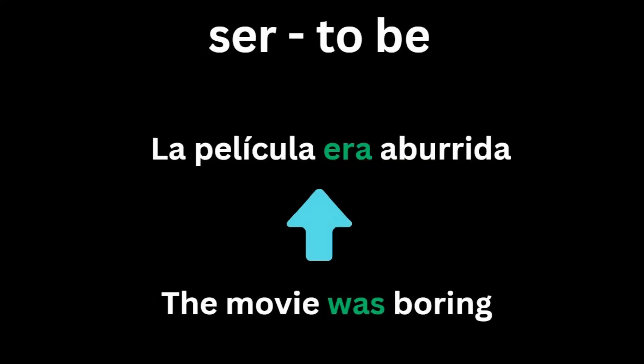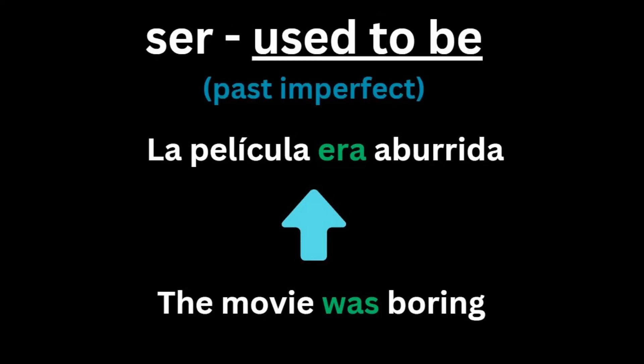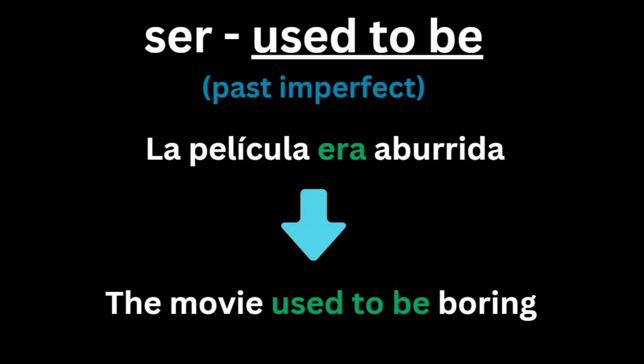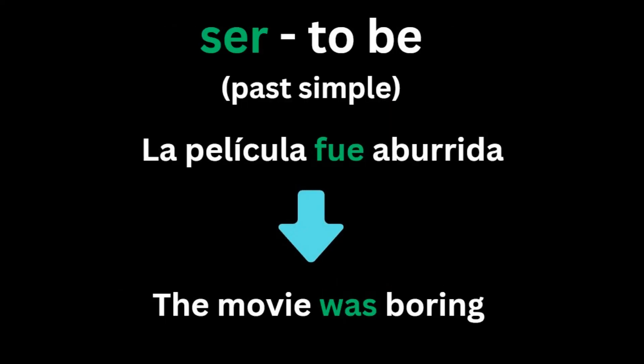If you take this phrase, the movie was boring, and plug it into a translator, it might give a translation that has the word era. While the translation of the sentence doesn't go away, the meaning is quite wrong, because era is the imperfect tense of ser for the it pronoun, meaning used to be. Saying la película era aburrida means the movie used to be boring, which logically doesn't make sense, which is why fue has to be used. Era is used more when describing objects and people, but that's a topic for a future video.